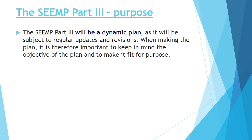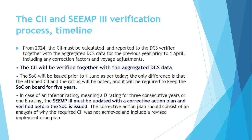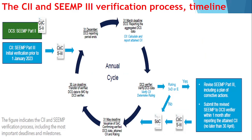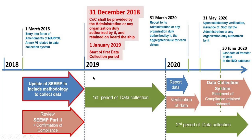CII is also a dynamic plan because it is subject to regular updates and revisions. Normally, verification and company audits are done in a 3-year cycle. The annual cycle has a reference with IMO DCS — one calendar year of data collection, then reporting to the administration by 31st March.